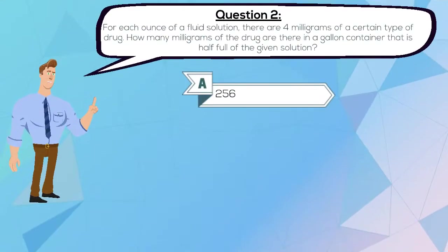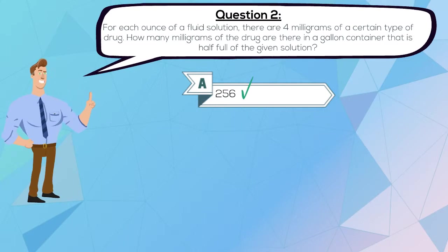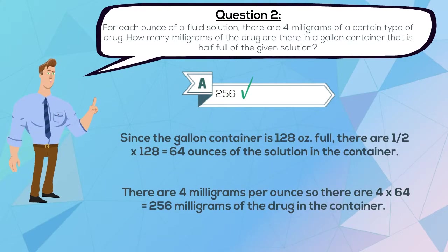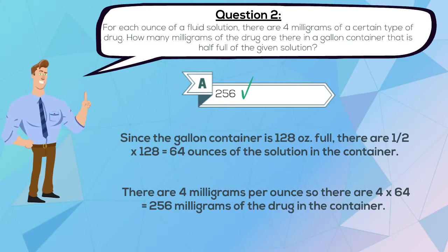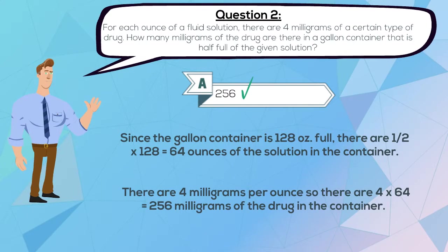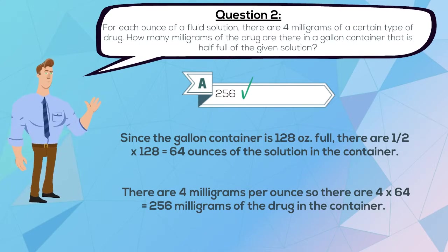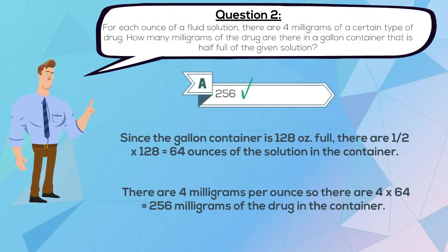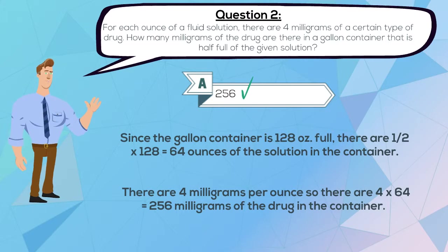The correct answer is A, 256. Since the gallon container is 128 ounces full, there are 0.5 times 128, which equals 64 ounces of the solution in the container. There are 4 mg per ounce, so there are 4 times 64, which equals 256 mg of the drug in the container.